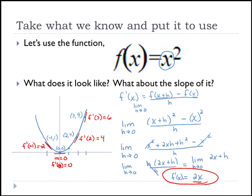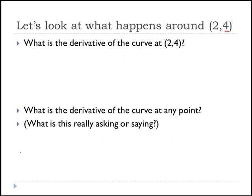We want to focus specifically on the point (2, 4) and the tangent line there. A tangent is a line that touches a curve at exactly one point, and this tangent line touches only at (2, 4). What we just did gives us the derivative of the curve at any point — the formula is 2x — so if we want the slope at many points, we simply plug in our x value.